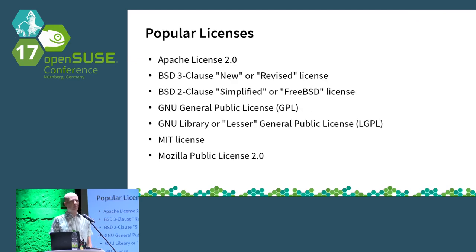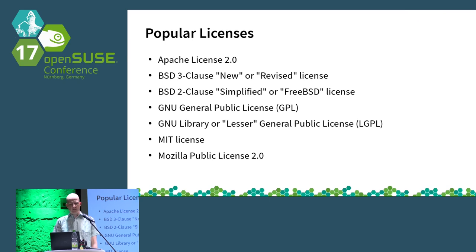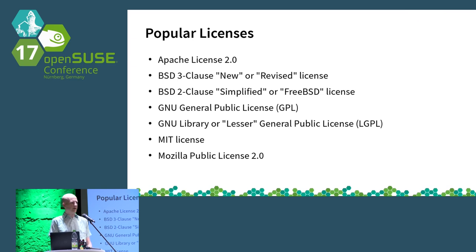On the OpenSource.org webpage you also find a list of popular licenses used in the wild. There is the Apache license, which is not only used for Apache but for a lot of Java packages. You have the BSD 3-clause and BSD 2-clause, which are also very often used. You have the GPL from the FSF and the LGPL, which is the lesser or library version of the GPL. You have the MIT license, used for X11 and a lot of Ruby stuff. And you have the Mozilla Public License, which is not so much used but is very relevant because LibreOffice and Firefox are under this license.